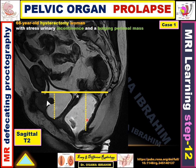This is a sagittal T2 image — fluid appears as high signal in the rectum and urinary bladder. Start by thinking: is there prolapse? What type of prolapse? Which specific organ is prolapsed, and can you detect the degree of prolapse?